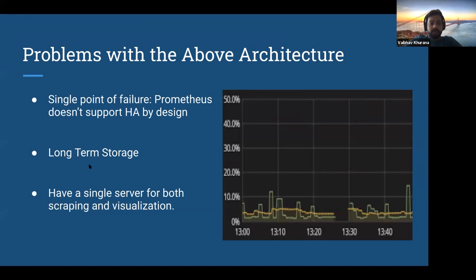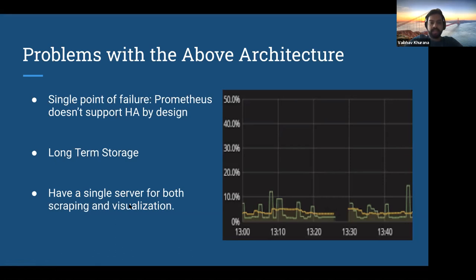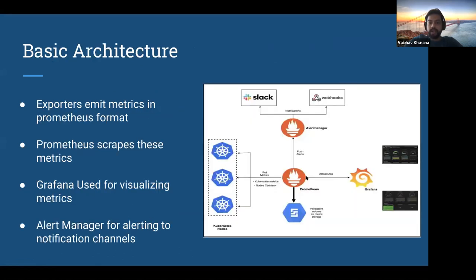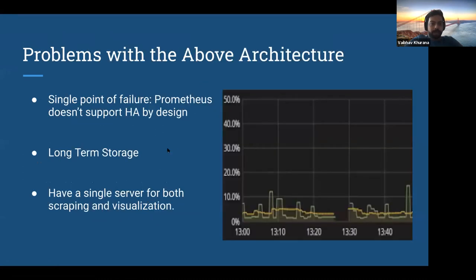There's also a problem of long-term storage — with the number of metrics, your volume size keeps on increasing. When your volume size keeps growing, whenever Prometheus restarts, the WAL size increases and it takes a lot of time to come back up. You'll find many issues reported in the Prometheus community about how it takes a long time to recover. And then you have a single server for both scraping and visualization — only one single point doing both jobs.